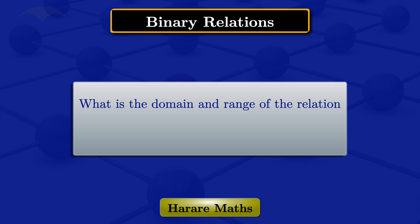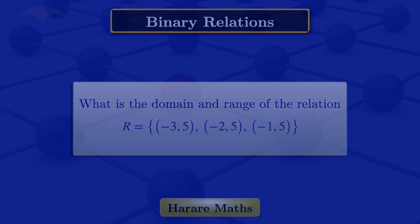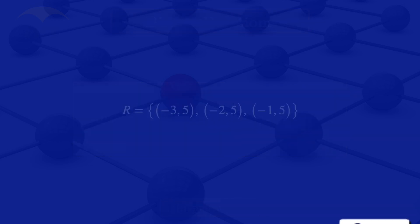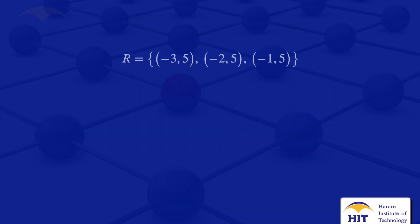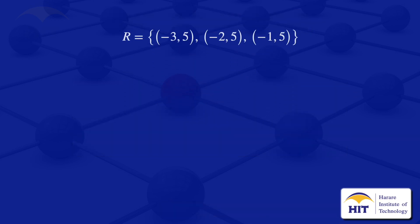In this tutorial I'm going to find the domain and range of the relation r, which is the set of ordered pairs: (-3, 5), (-2, 5), (-1, 5).